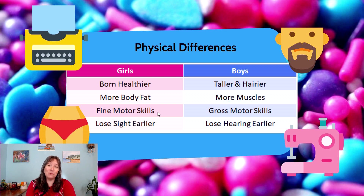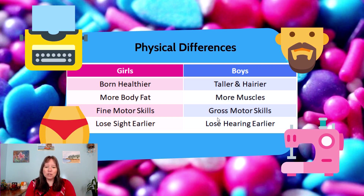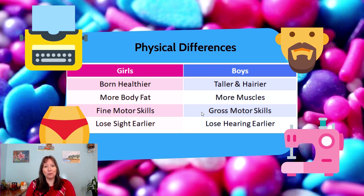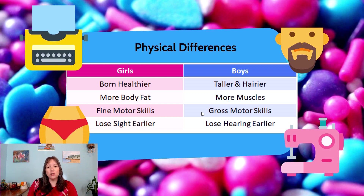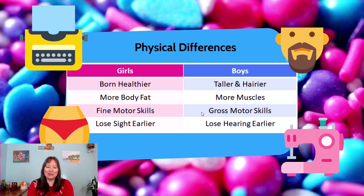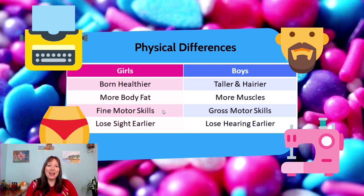Girls tend to develop superior fine motor skills earlier on average, while boys tend to develop superior gross motor skills earlier. In terms of gross motor skills, boys tend to be stronger, faster, and have faster reaction times. That could be socialized — boys may be rewarded for engaging in sports and active things — but it could also be biologically based, as boys tend to have higher activity levels related to hormones and androgens. Girls, on the other hand, tend to be better at fine motor tasks like using needles and thread, writing, or typing.